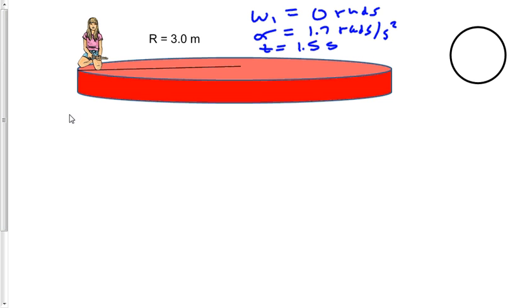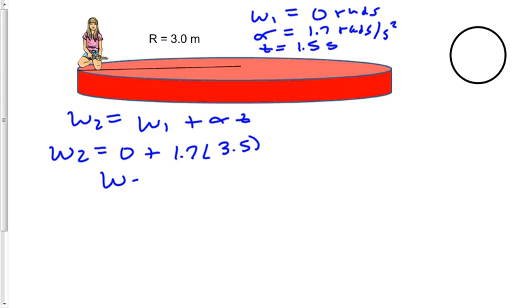So we start with our equation: omega 2 equals omega 1 plus alpha t. So we'll be solving for omega 2. So omega 2 equals 0 plus 1.7 times 3.5, and omega 2 is equal to 2.55 radians per second.